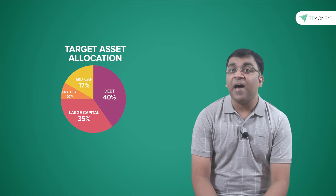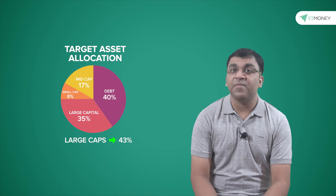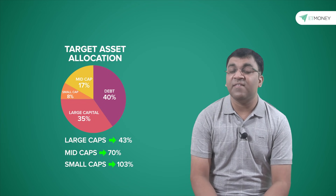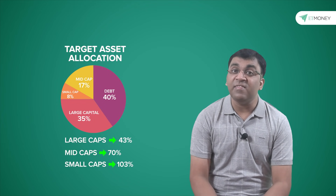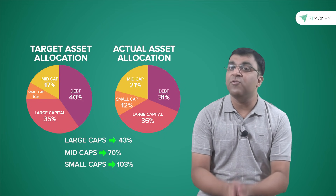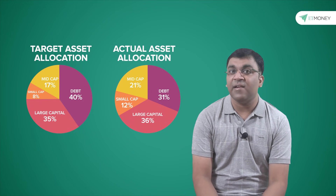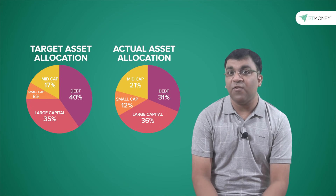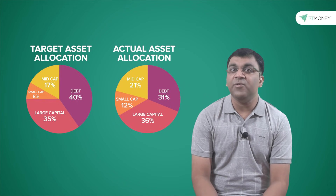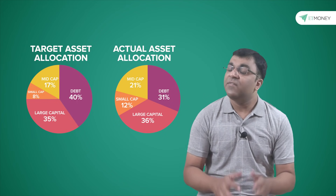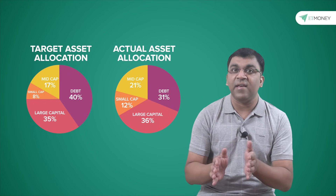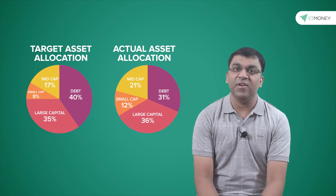The last one year has been a happy hunting ground for equities, with the large caps, mid caps and small caps growing by 43%, 70% and 103% respectively. This sudden bounty, although very welcome, has also messed up my targeted asset allocation, which has now moved from a 60-40 to a 69-31. So what's needed now is to get back to the targeted asset allocation, which can be best done using a technique called portfolio rebalancing, which shall be our topic of understanding in this video.